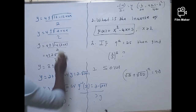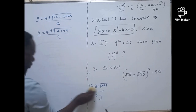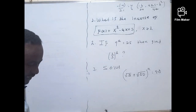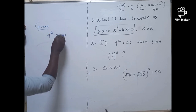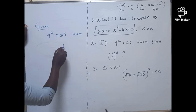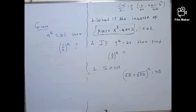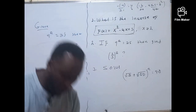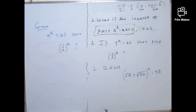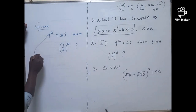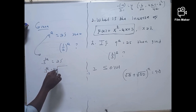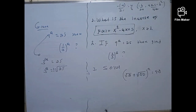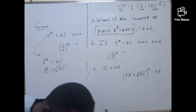Now let's come to the second problem. You are given that 9^A = 25, and you are asked to find the value of (1/3)^A. How are we going to describe this in terms of the first equation? First of all, note that 9^A means (3²)^A = (3^A)² = 25. So 3^A = ±√25.